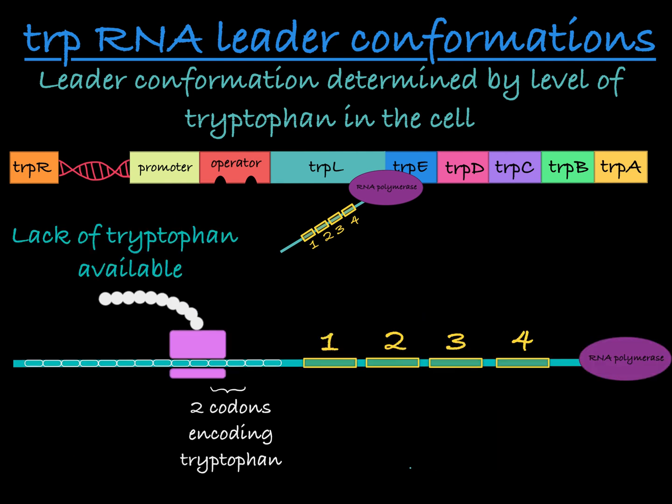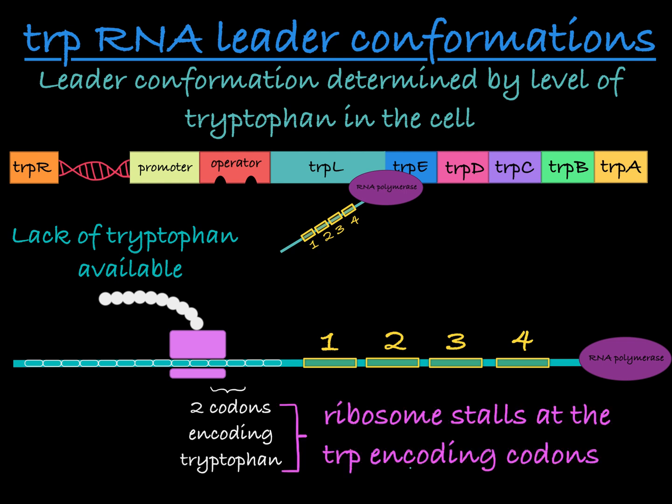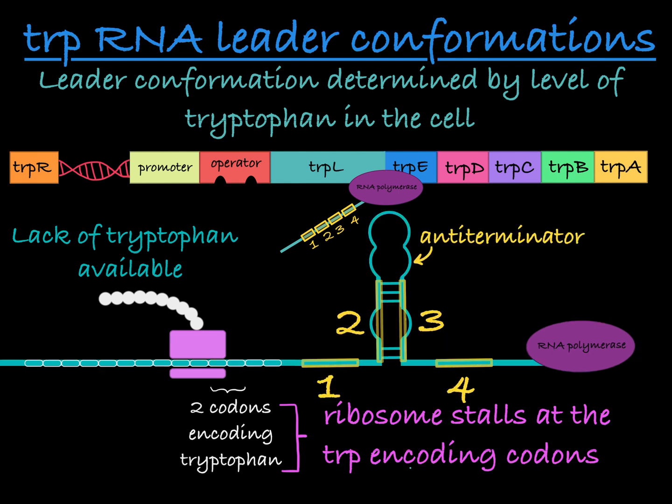When there is less tryptophan available, the ribosome stalls at the two tryptophan codons, taking longer to move forward with translation as it waits for tryptophan to be incorporated into the polypeptide. Because of this stall, the anti-terminator forms, allowing transcription of the structural genes and expression of the proteins that will help the cell make more tryptophan.